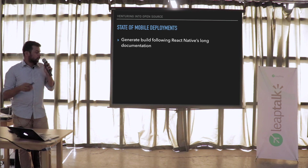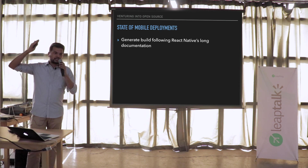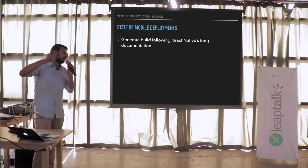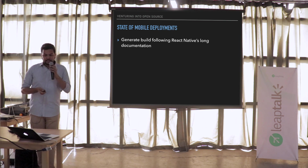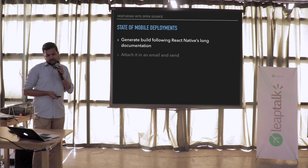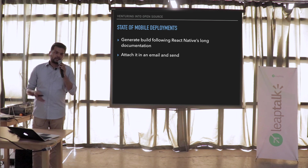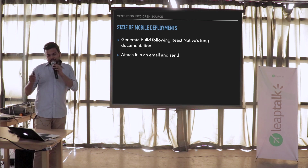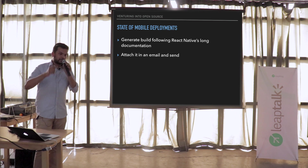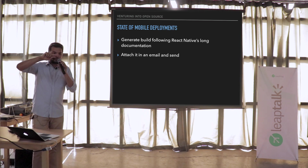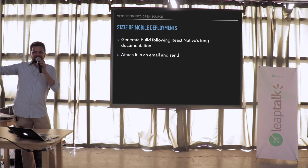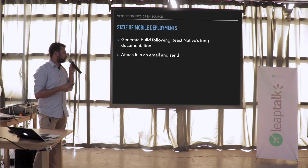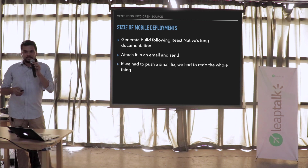We worked on React Native. We had this really long documentation — like a 10-page document you had to follow step by step. If you messed one thing up, the whole thing would fall apart. You had to generate a build following that long documentation. And you didn't have any way to send it — some people would use HipChat, some Google Drive, some Slack, and we used email. We always had this boilerplate content like 'Hello project manager name, this is the build as of this date.' It was a nightmare. And if you had to push one line of code, you'd have to do the entire process again.